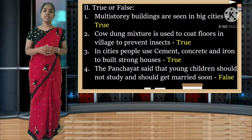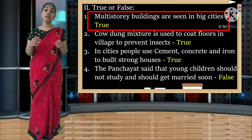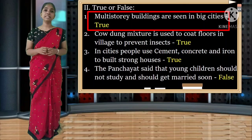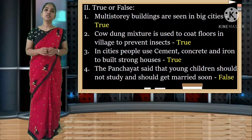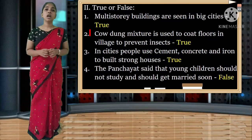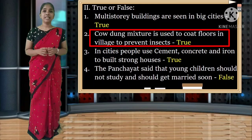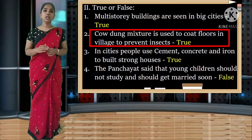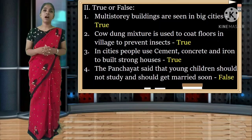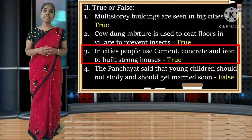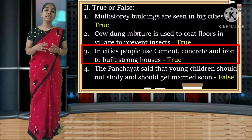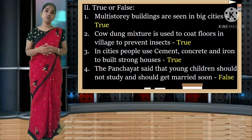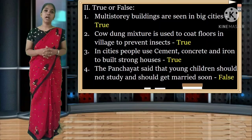True or false. First: multi-story buildings are seen in big cities - true. Second: cow dung mixture is used to coat floors in villages to prevent insects - true. Third: in cities, people use cement, concrete and iron to build strong houses - true. The answer is true.